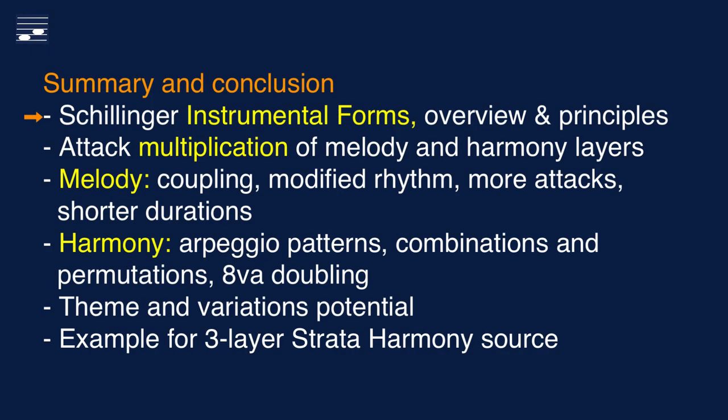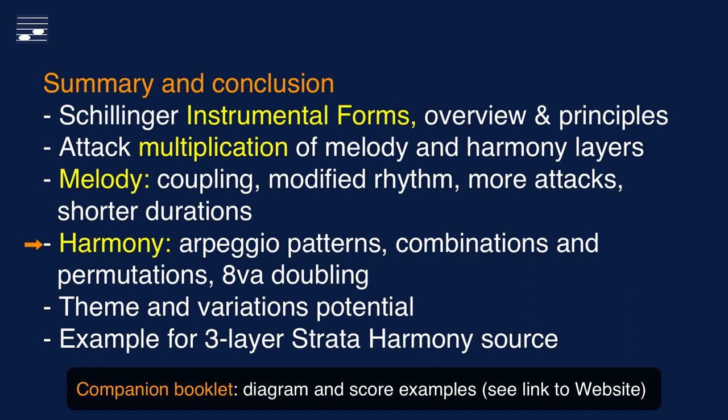This tutorial presents an overview of the principles for generating Schillinger instrumental forms. Attack multiplication was applied to melody and harmony layers. Additional melody parts are created through coupling. Multiplication yields modified rhythm with more shorter-duration attacks. Harmony layer instrumental forms yield many arpeggio pattern options using part combinations and permutation, with constant duration or non-uniform rhythm attack patterns. New parts are obtained through octave doubling. You may write many variations of the source material by applying different instrumental forms.